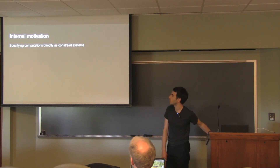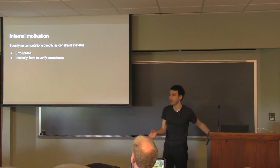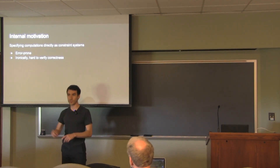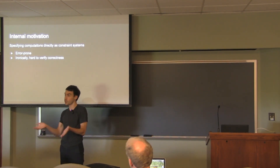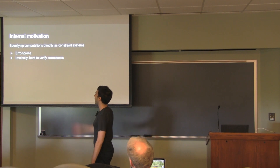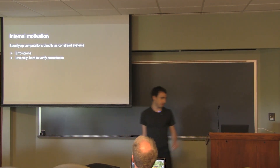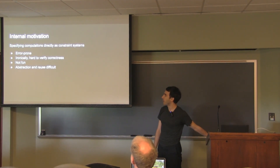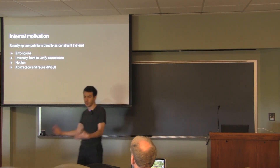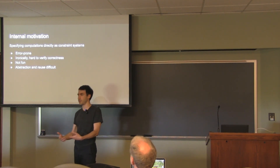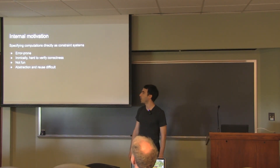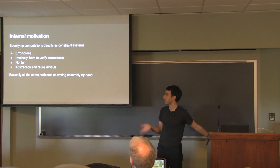Specifying computations directly as constraint systems is super error-prone. There was actually a huge vulnerability in a bunch of cryptocurrencies — a stupid overflow, because it's hard to verify correctness of these constraint systems. And making abstractions and reusing code is extremely difficult, because constraint systems aren't really composable — you can just put them next to each other. It's all the same problems as writing assembly by hand.